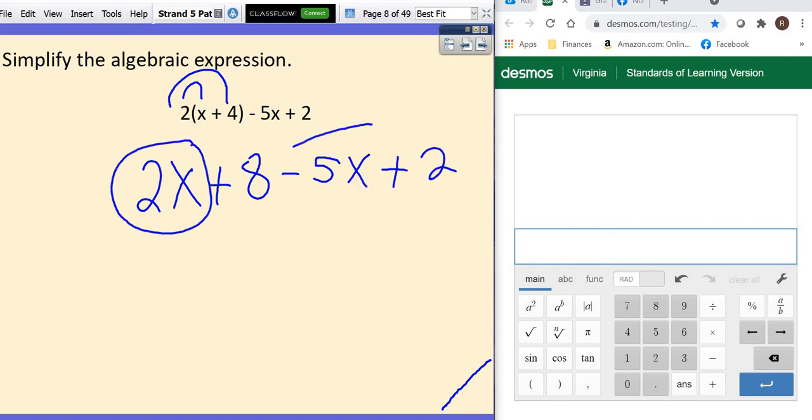My 2x and my negative 5x have to go together. So I'm going to say 2 minus 5 and get negative 3x. And then my positive 8 and my positive 2. I'm going to use calculator. 8 plus 2 is a positive 10.